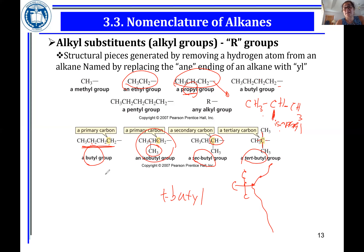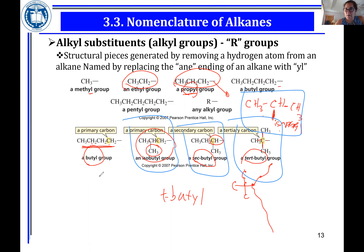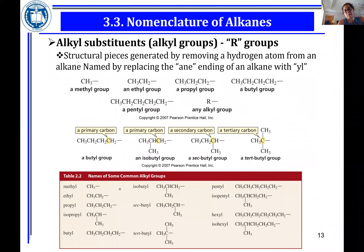For everything else, you just drop the -ane ending and add -yl. So methane changes to methyl — drop the -ane, add -yl. The only ones requiring extra practice are iso, sec, and t prefixes. You also have pentyl and isopentyl, hexyl — for those, if there's a methyl group on carbon two, it gets the iso prefix. The iso, sec, and t variants are the ones that take a couple of practice runs to master.